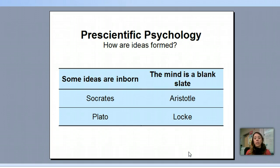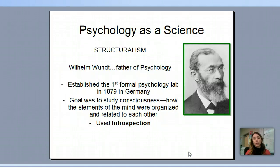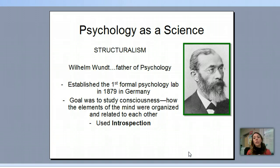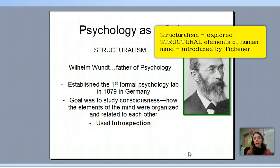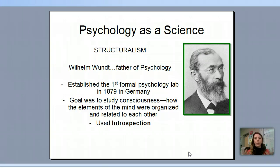So let's talk about when psychology actually did become a science. You need to know that the father of psychology was William Wundt — a German scientist. He started psychology under the idea of structuralism and empirical evidence, meaning you had to have a study that went with the hypothesis. He established the first formal psychology lab towards the end of the 1800s in Germany. He wanted to look at consciousness and how the mind was organized and what that related to the body. As a structuralist, he looked at the elements of the mind — how things were structured in the mind.